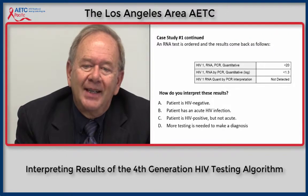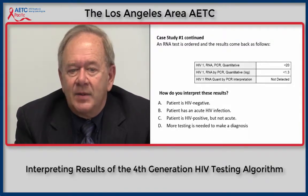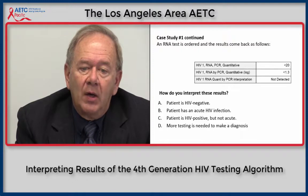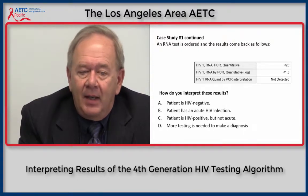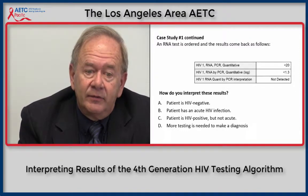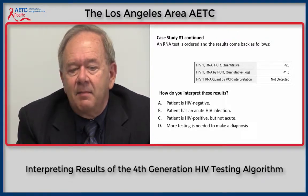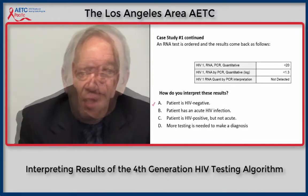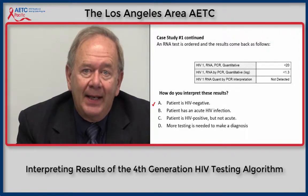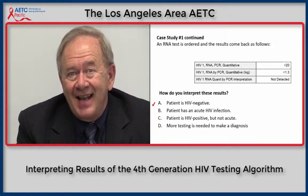We'll now look at a potentially different outcome for case one. After the initial positive fourth-generation assay, the RNA assay results come back with a quantitative PCR of less than 20 copies — a log result of less than 1.3 — interpreted as RNA not detected. The correct interpretation is A: this patient is HIV negative. An individual who has a reactive fourth-generation assay, a negative antibody test, and a negative RNA test means the first fourth-generation test was false positive, and the individual is not infected with HIV.